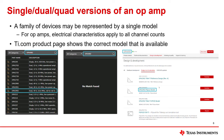As covered earlier in the video, the integrated library contains all the models on ti.com. However, sometimes a family of devices will share a single model. In this example, the quad-channel op-amp OPA4992 does not have a match in the search, even though the dual-channel OPA2992 is shown in the list. This is because for op-amps, the electrical characteristics apply to all channel counts. Therefore, all channel variants within the 992 family are represented by the OPA2992 model.